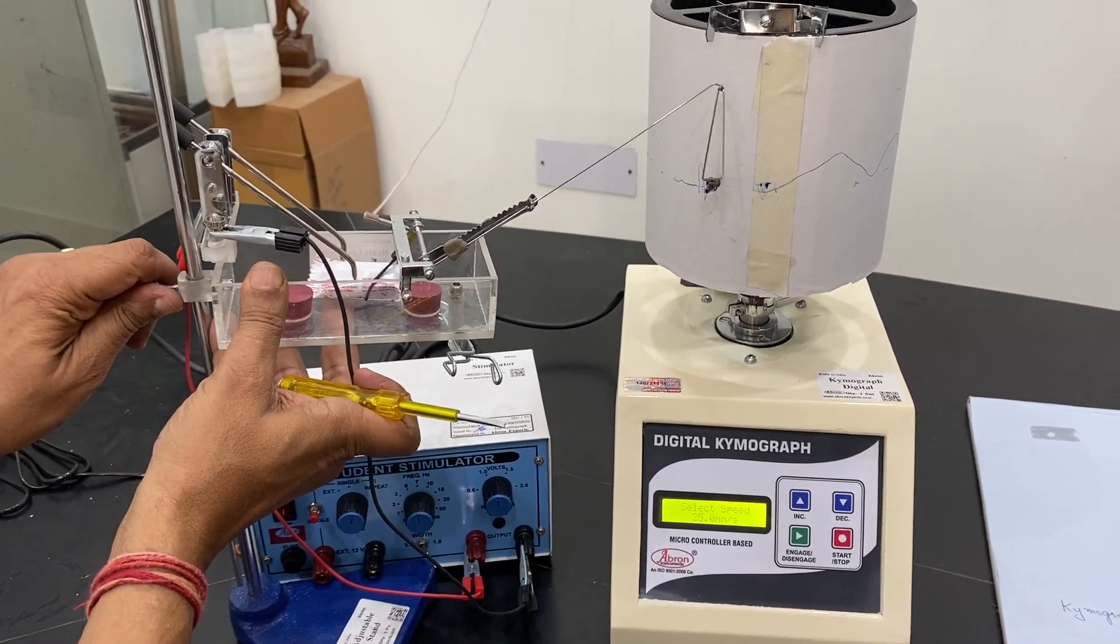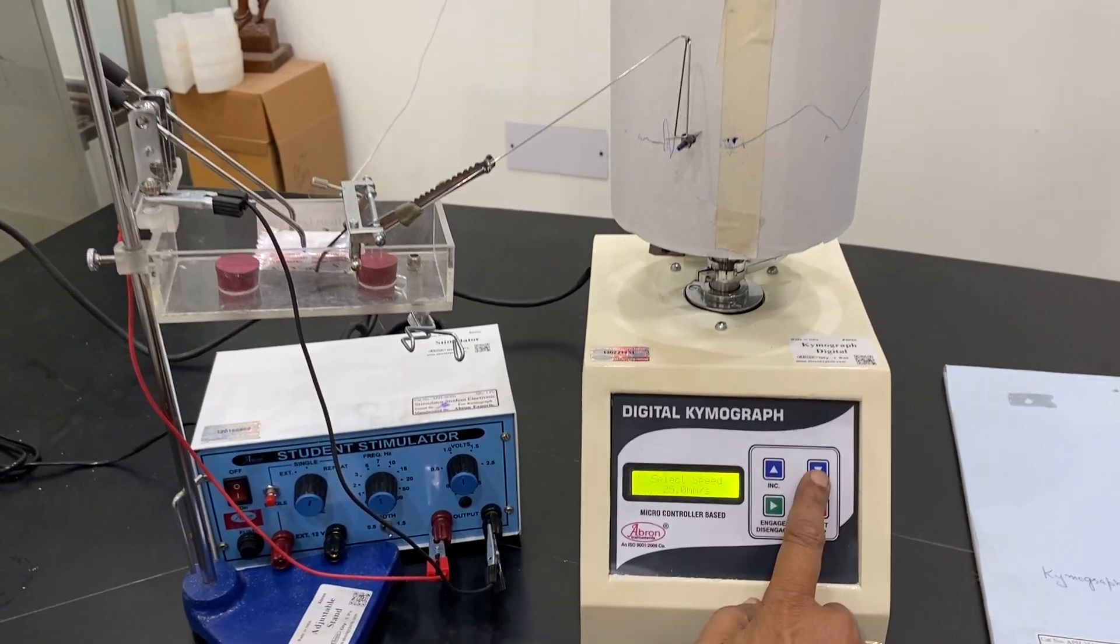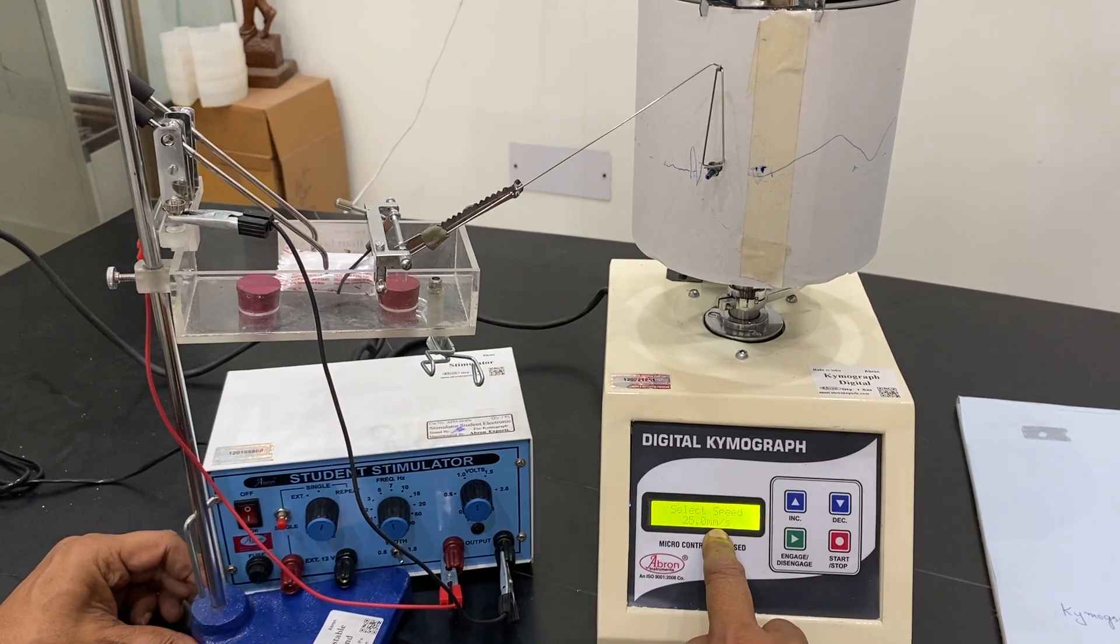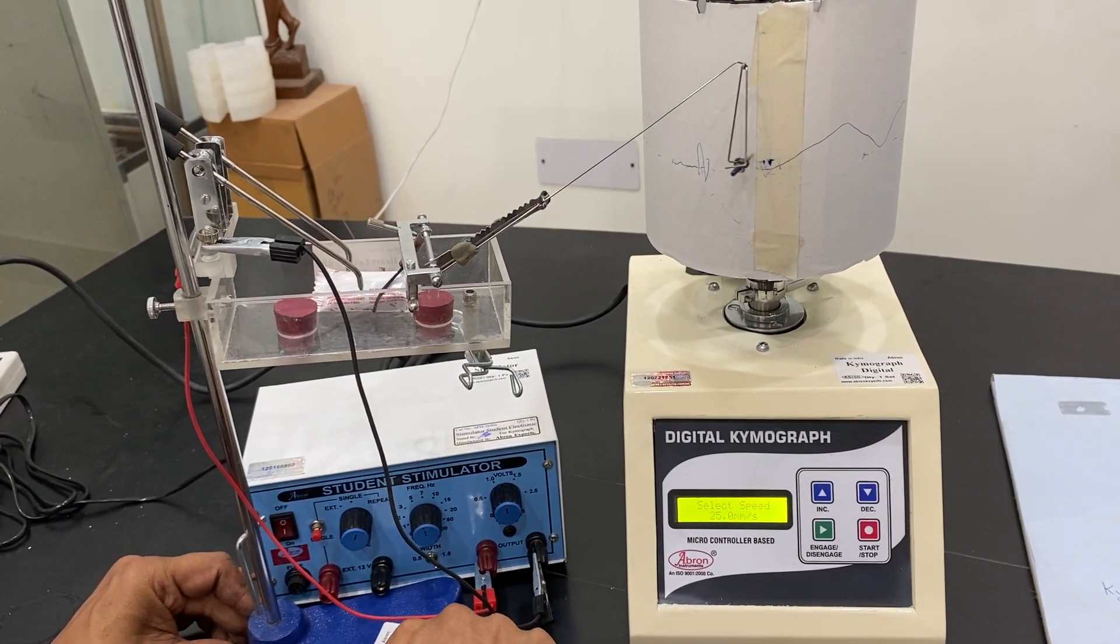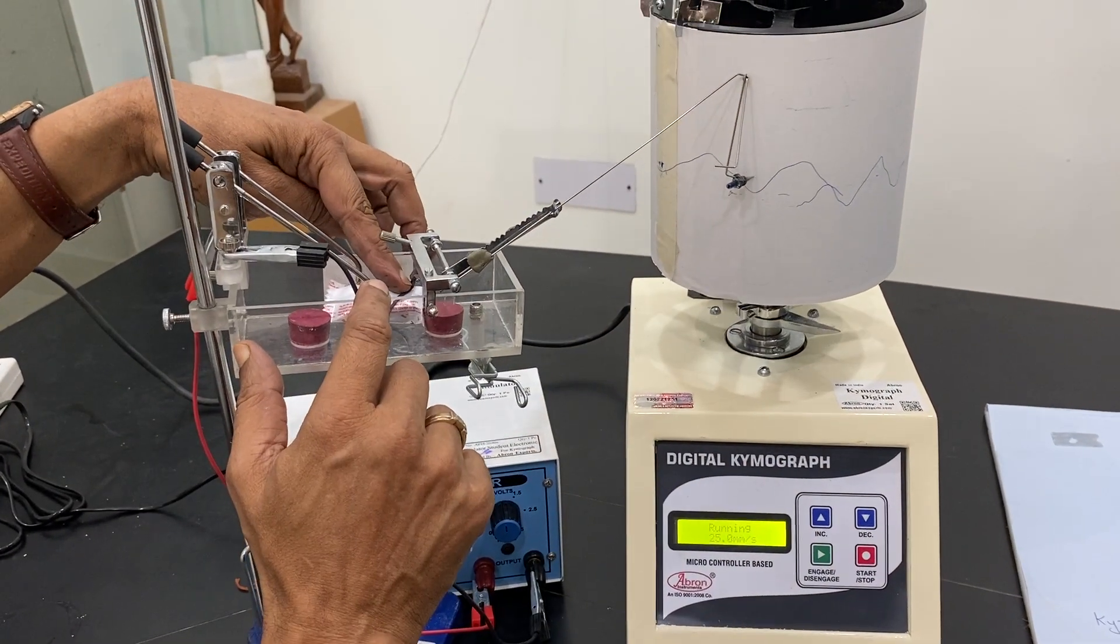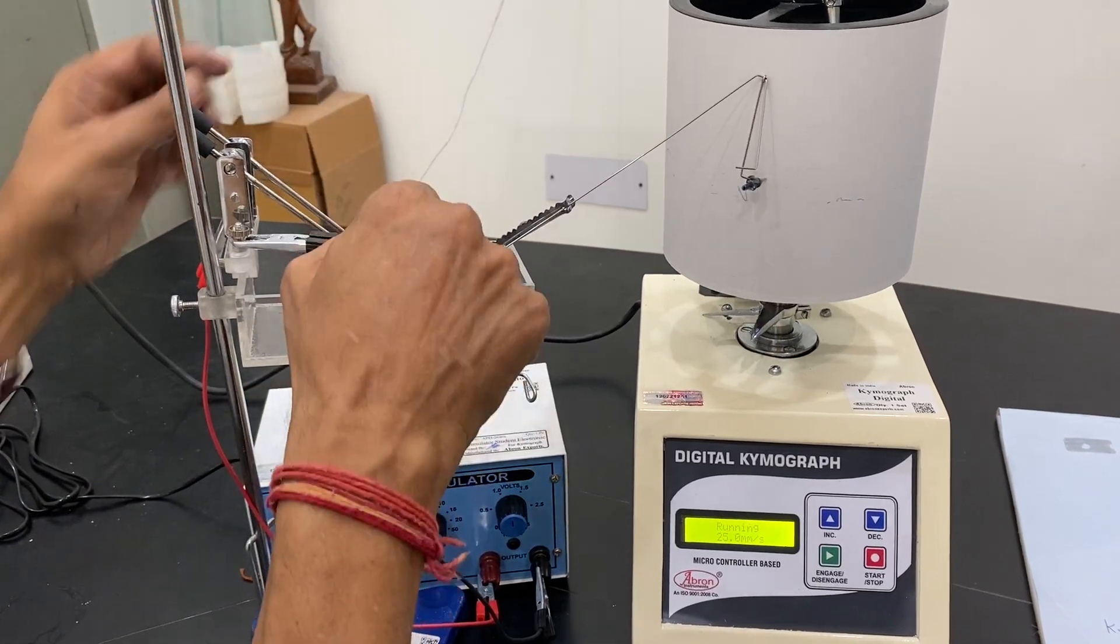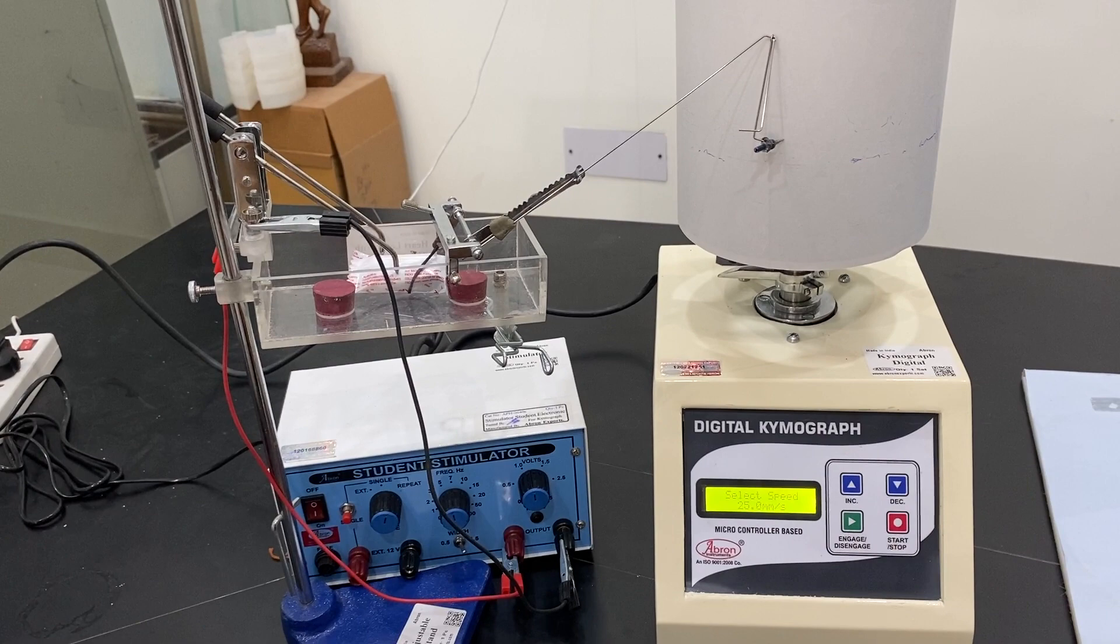Now I can select the speeds which are increaseable by digital Kymograph. I am using 25 mm per second speed. When there is a heart movement, it will move and give a graph. Then you can record by putting the chemicals, what is the reaction of the heart, and then you can stop and see.